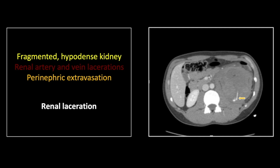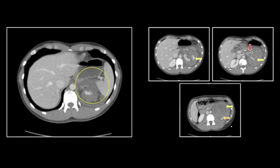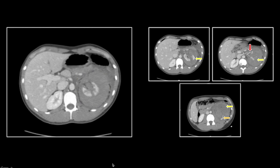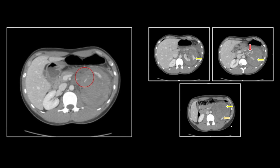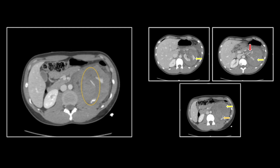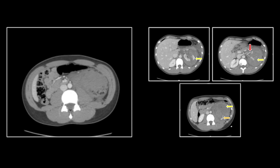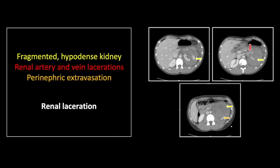Inferiorly and posteriorly, you can see the inferior extent of the active extravasation emanating from those torn vessels. There is the vascular portion of the superior kidney. Here are the torn vascular ends, and you can follow that active extravasation inferiorly in the left renal fossa. So that is an extensive renal laceration, effectively a transection of the left kidney with lacerations of the left renal vein and left renal artery.